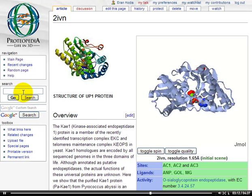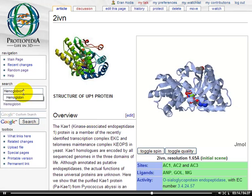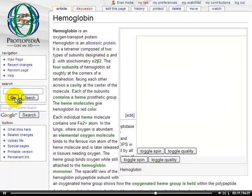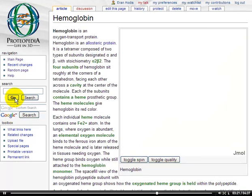An example of a topic page is hemoglobin. Another is acetylcholinesterase, and peptide is yet another.